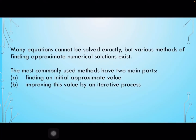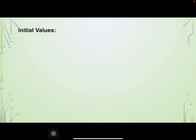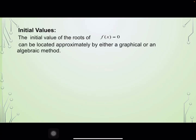Many equations cannot be solved exactly, but various methods of finding approximate numerical solutions exist. The most commonly used methods have two main parts: the first is finding an initial approximate value, and the second is improving this value by an iterative process. The initial value of the roots of f(x) equals 0 can be located approximately by either a graphical or an algebraic method.